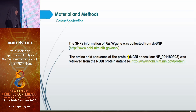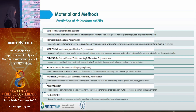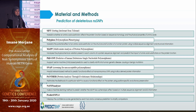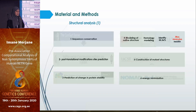We started by collecting non-synonymous SNP information from dbSNP and amino acid sequences from the NCBI protein database. We then used all the non-synonymous SNPs as input to a consensus classifier called PredictSNP, which includes eight different prediction tools to determine whether these SNPs are deleterious or tolerant.